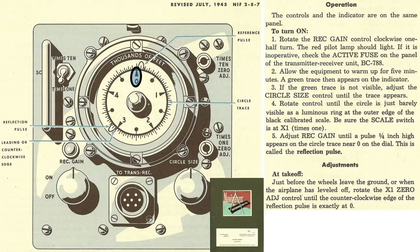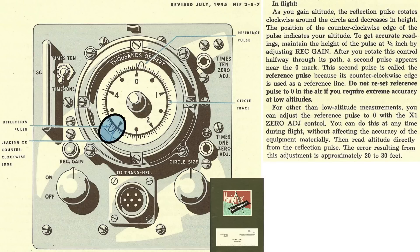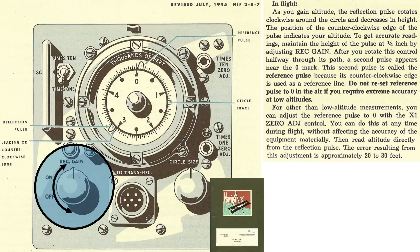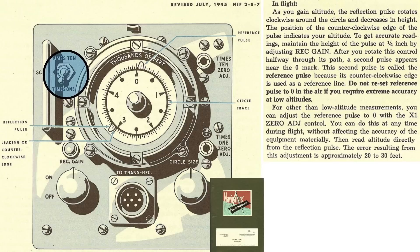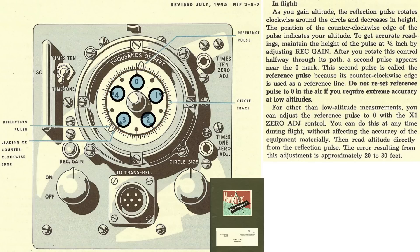As the plane is climbing, the reflection pulse lobe will start to move clockwise around the circle trace and the lobe will decrease in height as the plane's altitude increases. For greater fidelity, increase the reflection pulse lobe height by rotating the REC gain knob back to a quarter inch. Since the scale switch is in the x1 position, the indicator's gauge dial scale is read from zero to five thousand feet, where every one thousand feet of altitude is labeled with arrows on the circle trace.